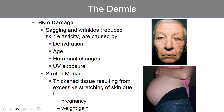Skin damage includes a number of things. Sagging and wrinkles result from a reduction in elasticity — as those elastic fibers are broken down, we lose the elasticity of our skin and it sags and wrinkles. Dehydration, age, hormonal changes, or exposure to UV radiation can cause this. This image shows one side of a face considerably more aged than the other; this individual was a truck driver, so that side of his face got far more UV exposure, breaking down the elastic fibers and promoting sagging and wrinkles.